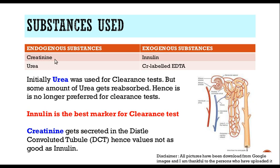Creatinine clearance is one of the best tests for evaluating renal function because creatinine is routinely being produced by the body, the level of creatinine in the blood remains constant throughout the day, and once it is filtered from the glomerulus it is not reabsorbed. Inulin is the best marker for clearance studies because it exactly follows all the characteristics required, but it is a foreign substance which we have to inject into the body. Urea was initially used for clearance studies, but some amount of urea gets reabsorbed in the loop of Henle, hence it is not a good test and nowadays we don't do urea clearance.